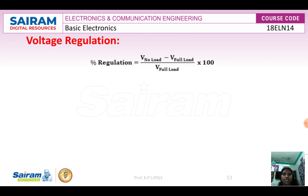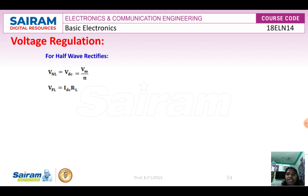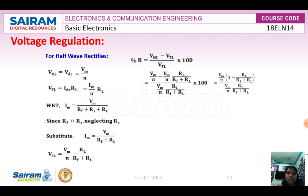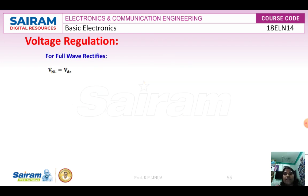For the half wave rectifier: no load DC voltage equals Vm/π, and full load voltage equals IDC × RL. Substituting the formulas and applying the condition that RF is much less than RS — so RS is neglected — the percentage of regulation equals RF/RL × 100. If we assume RF equals RL, the percentage of regulation is 100%. The same approach applies for the full wave rectifier, where the parameter values are twice those of the half wave rectifier, and the percentage of regulation is also 100%.